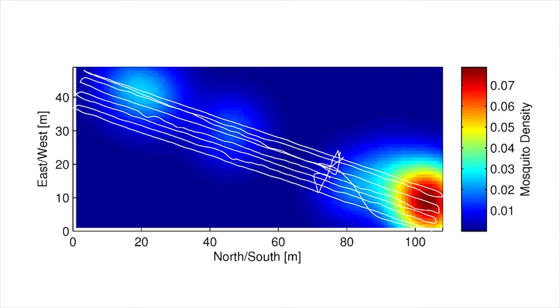We use this survey flight to approximate the true mosquito distribution by a mixture of Gaussian distributions, producing this density map.